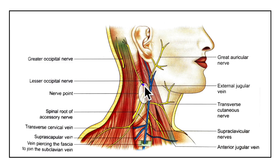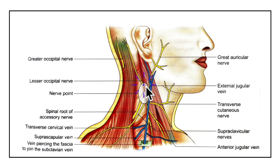Next we will learn about the lesser occipital nerve. It arises from the ventral ramus of the C2 segment of the spinal cord. It is seen at the posterior border of the sternocleidomastoid muscle, then winds around and ascends along its posterior border to supply the upper two-thirds of the medial surface of the pinna and the adjoining part of the scalp.